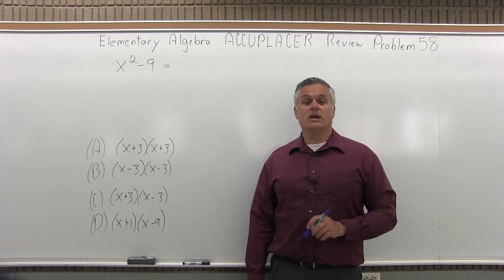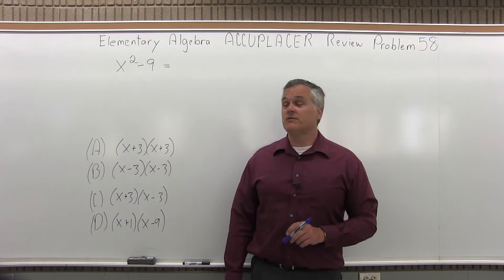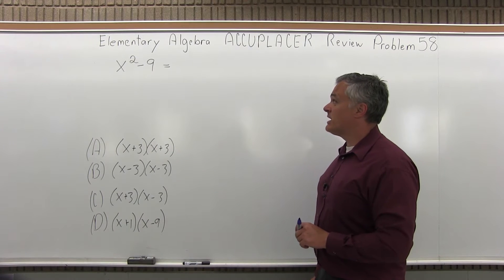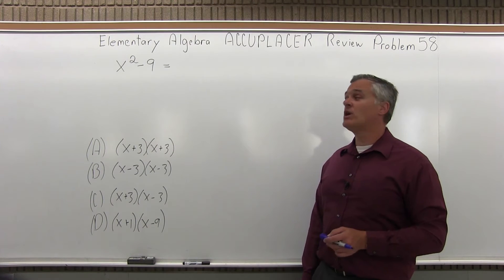This is the Elementary Algebra Accuplacer Review, Problem number 58. We have x squared minus 9 equals which one of the following options?